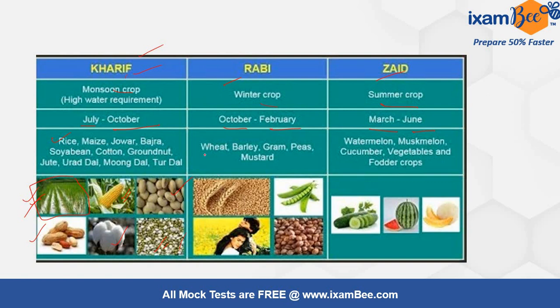Rabi crops are wheat, barley, gram, peas, and mustard. This is wheat, this is pea, this is gram, and this is actually a mustard field — here we are mainly focusing on the mustard crop.